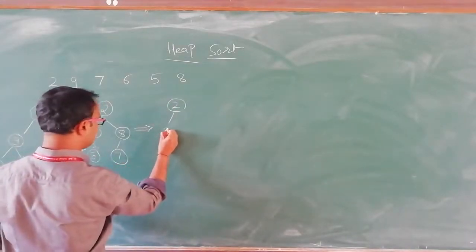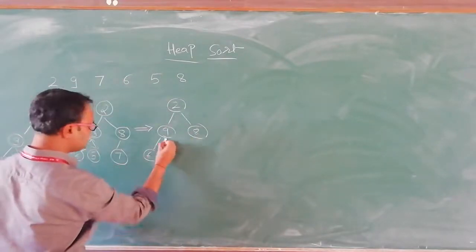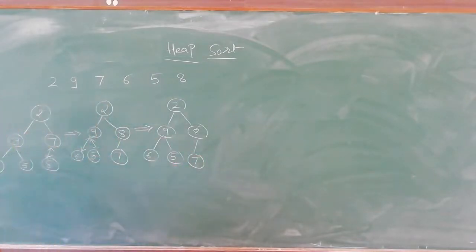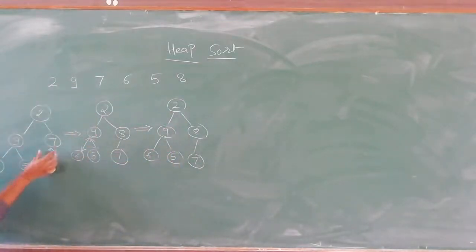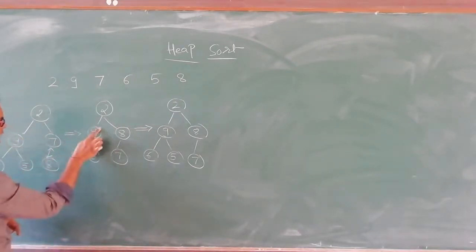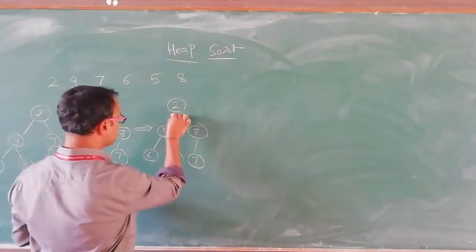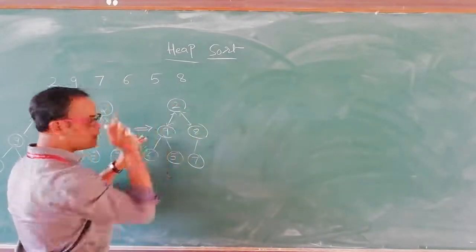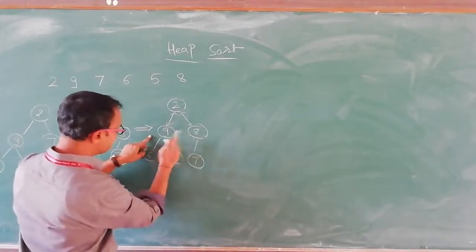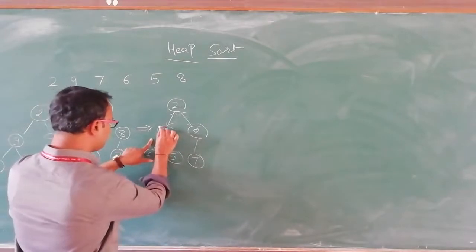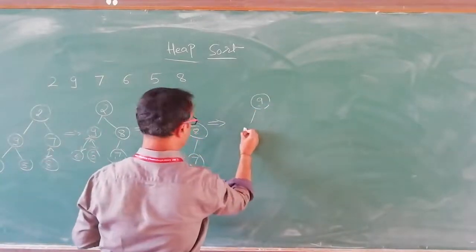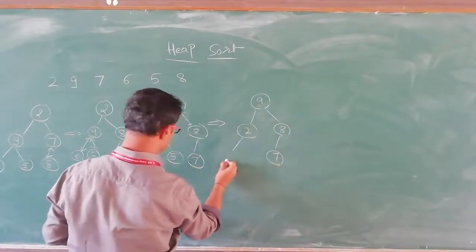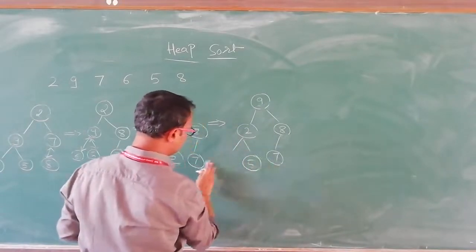Writing down the same tree: 9 at root, 8 to its right, 6 to its left, 5 and 7 as leaves. Swapping did not happen because 9 is already bigger than 6 and 5. Now we go to the next previous level. We then consider the root node 2. There are two children: 9 and 8. Compare both children — 9 is bigger than 8. The bigger node, 9, is compared with root 2 — 9 is bigger, so we swap. 9 comes to root, 2 goes down. 8 and 7 remain as they are, with 6 and 5 as leaves.